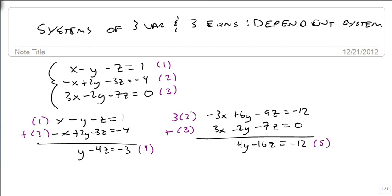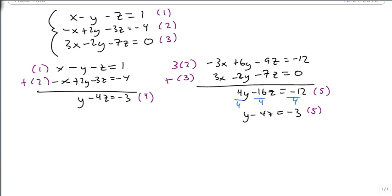Now it's really nice to take equation 5 and divide everything by 4. And we notice that we get y minus 4z equals minus 3. And that's our equation 5. And if you look carefully, 4 and 5 are the same, which means that if I try and eliminate them, I'm going to end up with 0 equals 0, which means we have a dependent system.